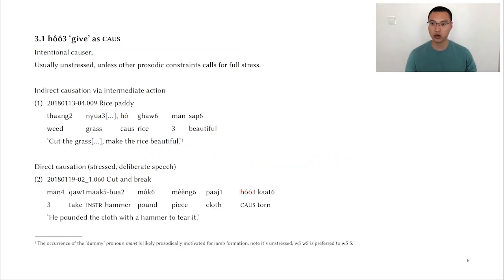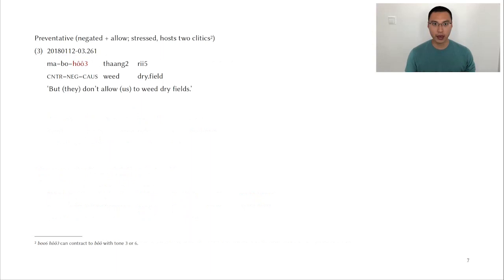Let's look at some examples. The hǎi give causative construction, intentional causer, and the marker is usually unstressed unless there are some other prosodic constraints. Example number one, you cut the grass in order to make the rice beautiful. This is the case of indirect causation, right? You don't directly act on the rice, you just do something else which makes the rice grow beautifully. Second example is direct causation. He pounded the cloth with a hammer to tear it. And the third example is preventative. In this case, the negator is combined with causative marker hǎi. So they don't allow us to weed dry fields. And we see that in this example hǎi is fully stressed. The reason is that it has to phonologically host two proclitics.